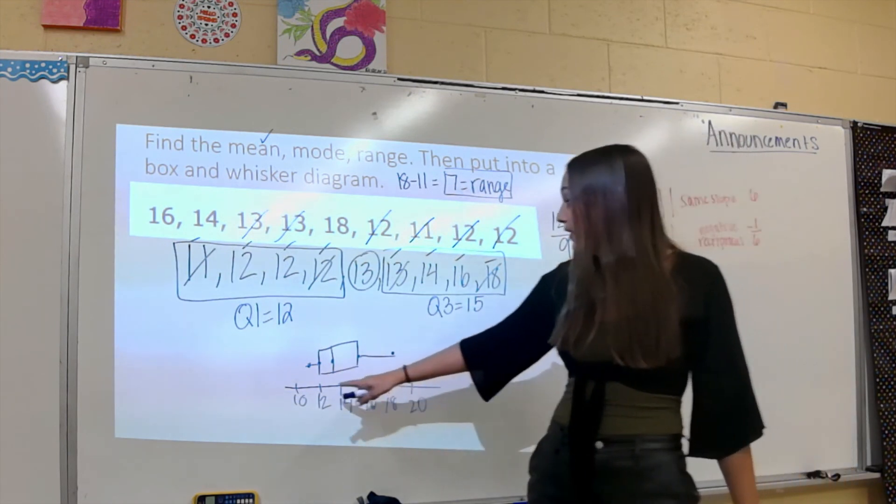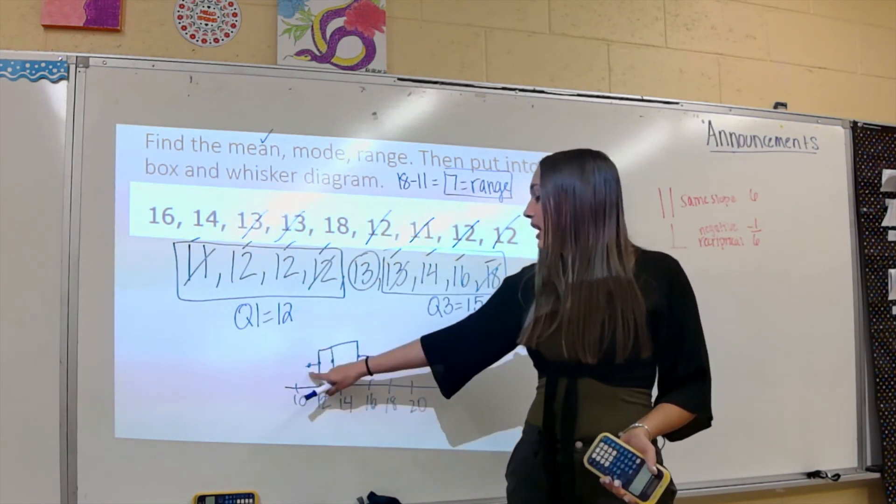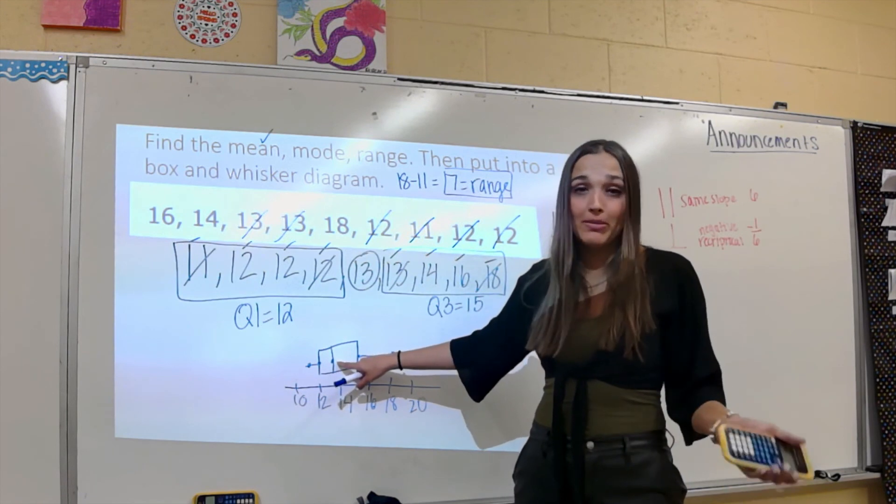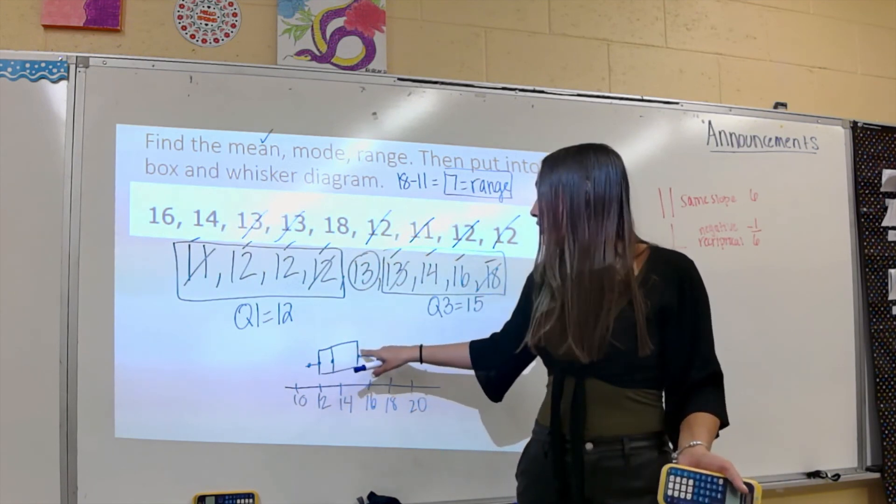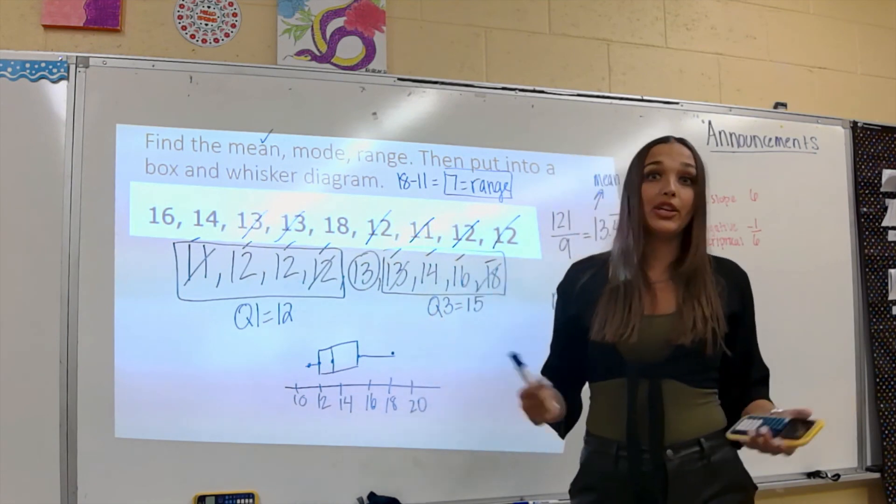We would have to know that this is 11. They usually would tell you on a diagram, like label this as 11. This is 11, that's my least. That's my Q1, my Q2, which is also my median for the whole problem, my Q3, and my max or greatest value.